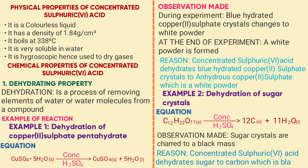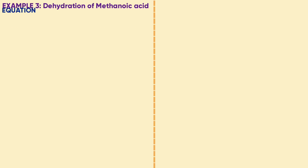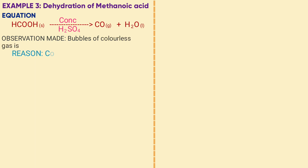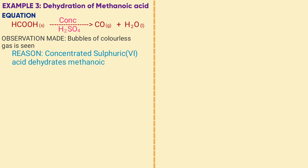Example three — methanoic acid. The equation: HCOOH + concentrated H₂SO₄ → CO gas + H₂O. Observation: bubbles of a colourless gas are seen. Reason: concentrated sulfuric acid dehydrates methanoic acid to carbon monoxide gas.